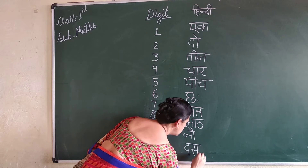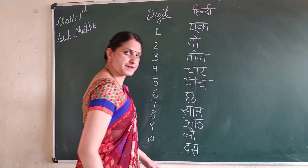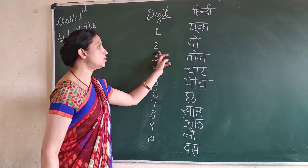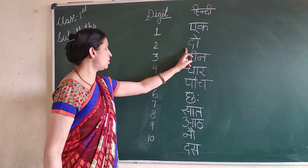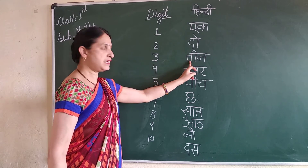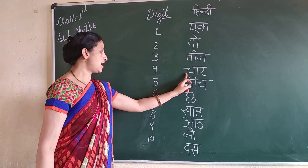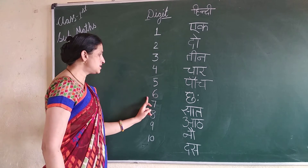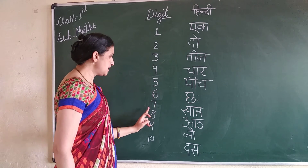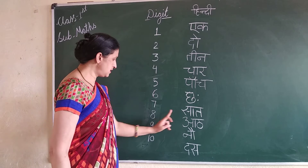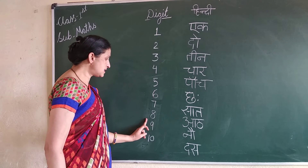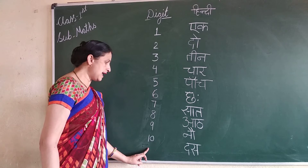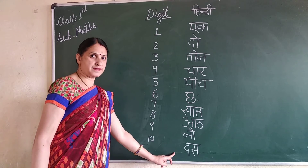Ten. Ten. One. Two. Three. Four. Five. Six. Seven. Eight. Nine. Ten.